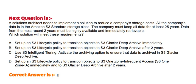Option A: Set up an S3 lifecycle policy to transition objects to S3 Glacier Deep Archive immediately. Option B: Set up an S3 lifecycle policy to transition objects to S3 Glacier Deep Archive after two years. Option C: Use S3 Intelligent-Tiering, activating the archiving option to ensure that data is archived in S3 Glacier Deep Archive. Option D: Set up an S3 lifecycle policy to transition objects to S3 One Zone-Infrequent Access immediately and to S3 Glacier Deep Archive after two years.